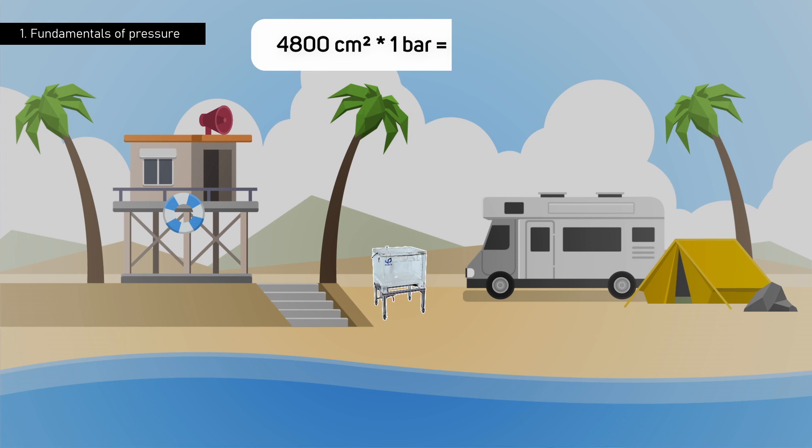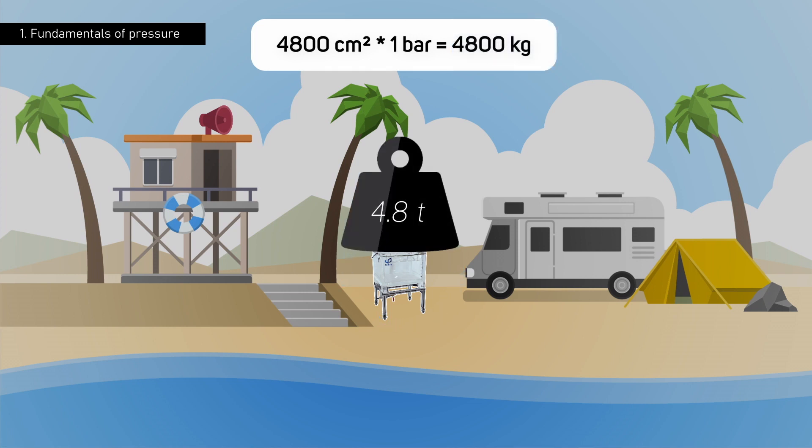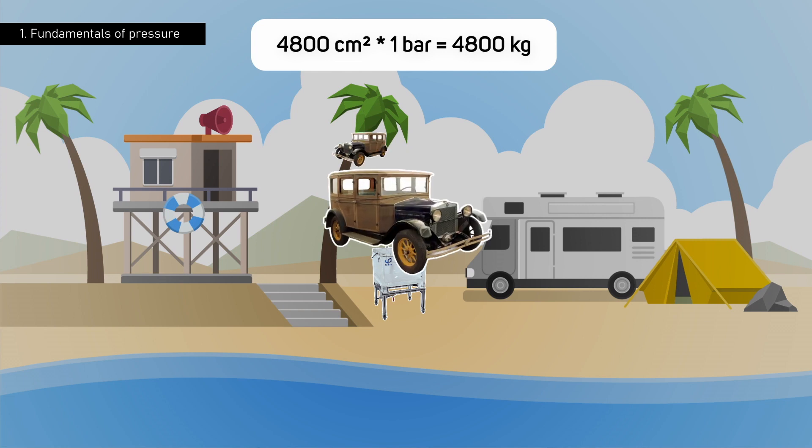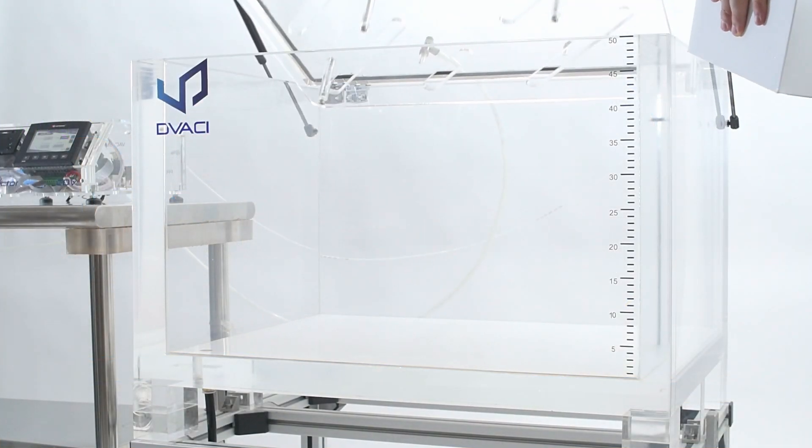In this scenario, all the external atmospheric pressure would be applied to the lid, exerting a total force of 4.8 tons. This is roughly equivalent to the weight of two cars. It is precisely because of these enormous pressures that the acrylic walls of our vacuum chambers are up to 50 millimeters thick.